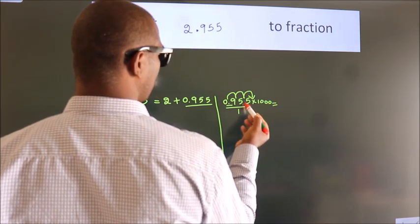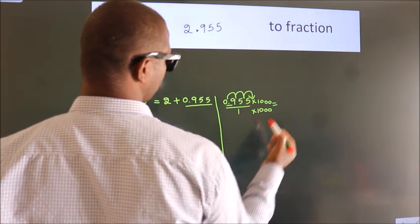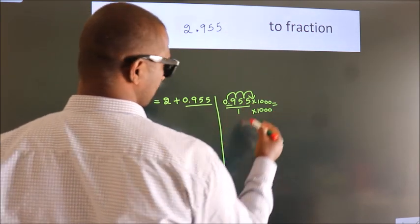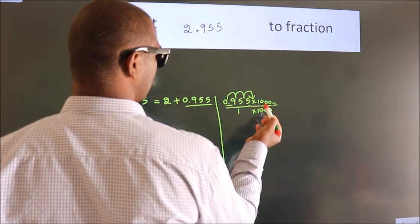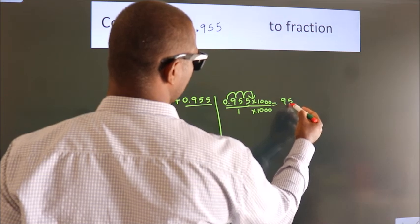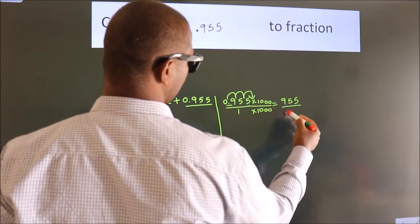Whatever number you are multiplying in the numerator, in the denominator also do the same. Next, 0.955 times 1000 equals 955. 1 times 1000 equals 1000.